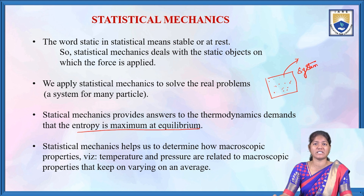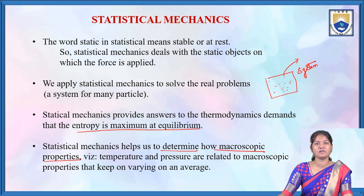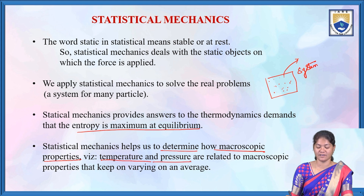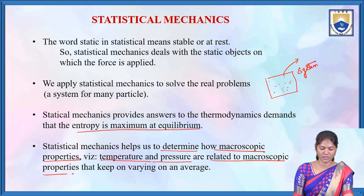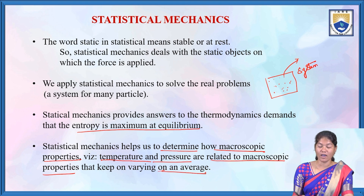Statistical mechanics helps us determine how microscopic properties — that is, temperature and pressure — are related to microscopic properties that keep varying on an average.